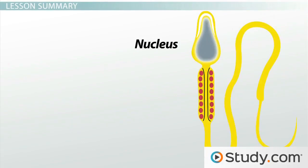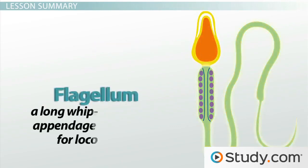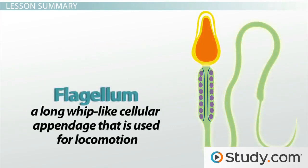Mature sperm have a nucleus that contains the haploid genome and not much else. They also have an acrosome cap, which will be used to penetrate the outer layers of the ovum so that the sperm can get inside. In addition, they have a single flagellum, which is a long whip-like cellular appendage used for locomotion. A sperm cell uses its flagellum, lashing it back and forth to propel the sperm forward.